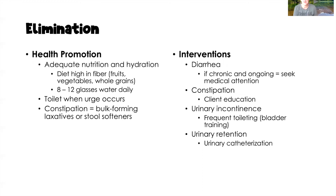For interventions with diarrhea, if it's chronic and ongoing, seek medical attention to discover the underlying cause so it can be treated. Remember that diarrhea can very quickly lead to acid-base imbalance, fluid imbalance, and electrolyte imbalance. For constipation, often client education is needed — looking at diet, fluid intake, stool softeners, and exercise. For urinary incontinence, frequent toileting, also called bladder training, involves emptying the bladder every one to two hours to train the body.